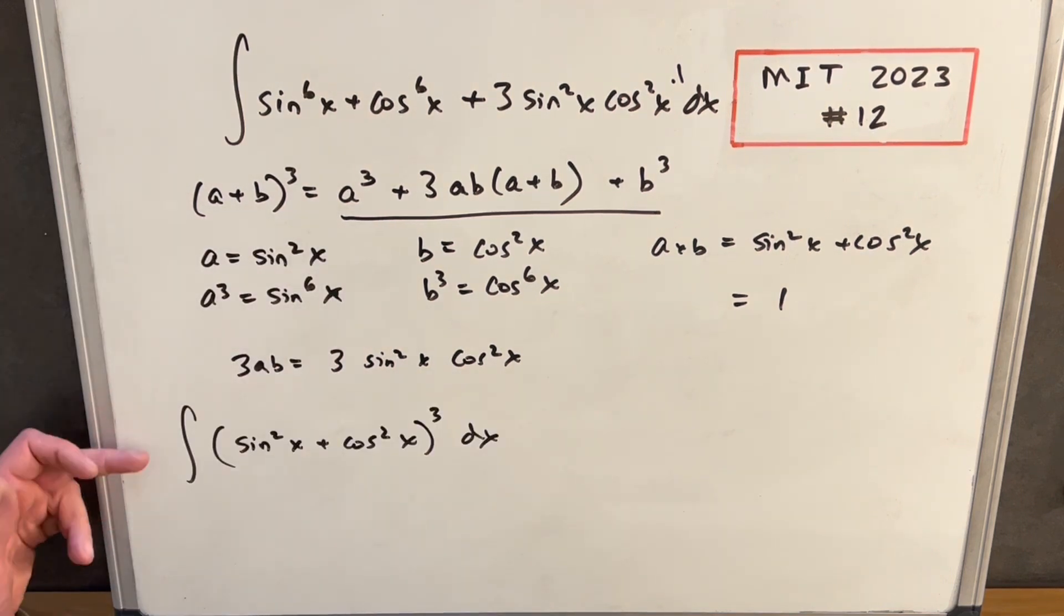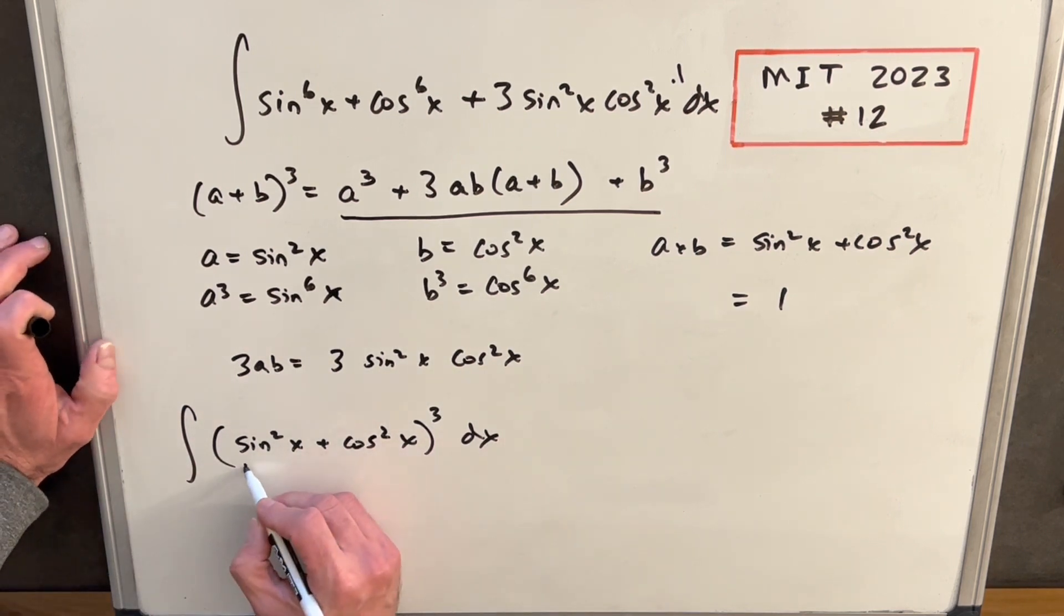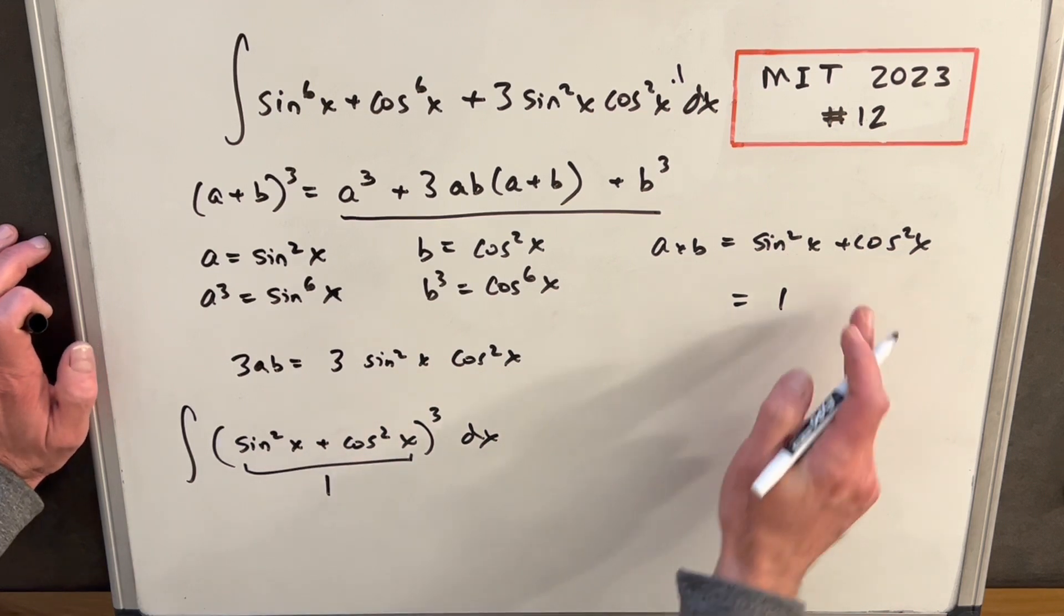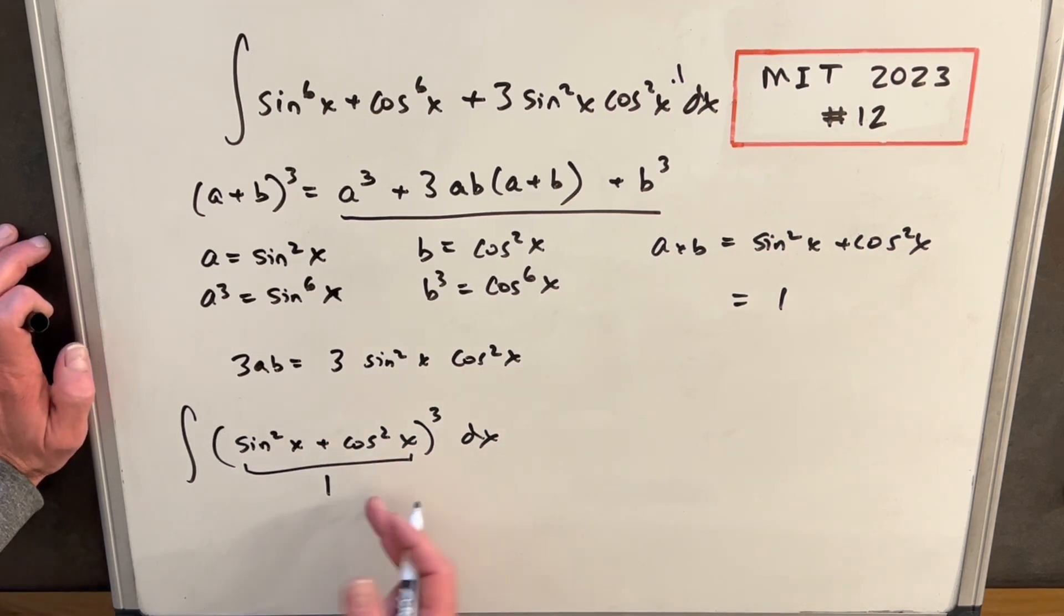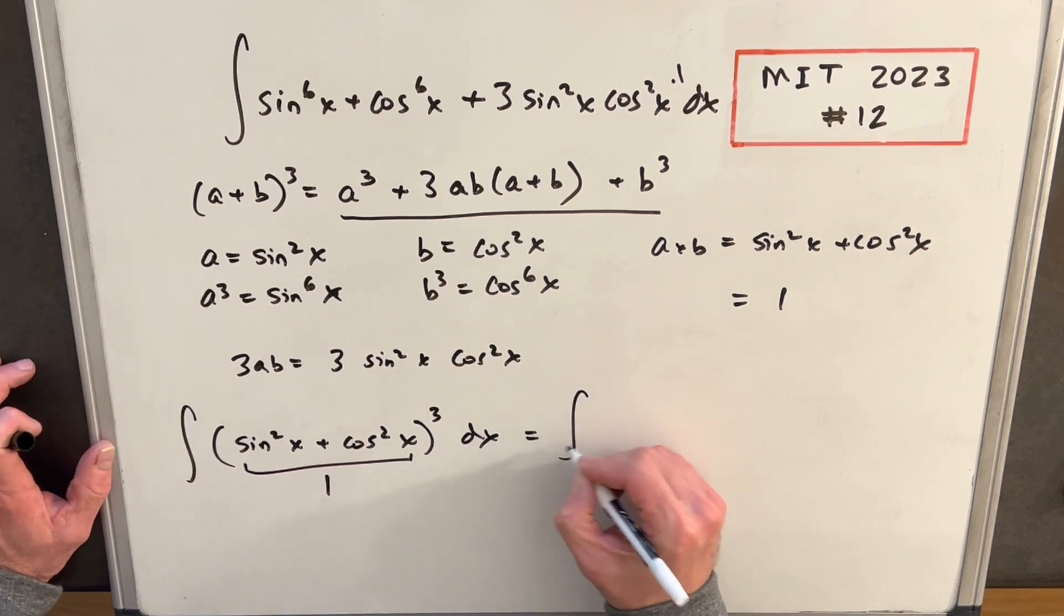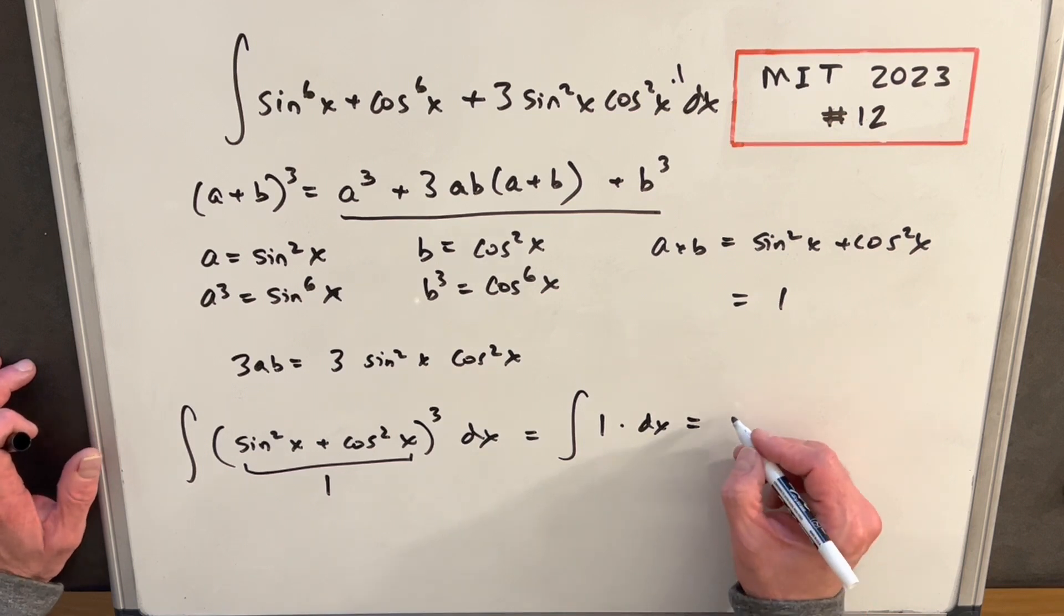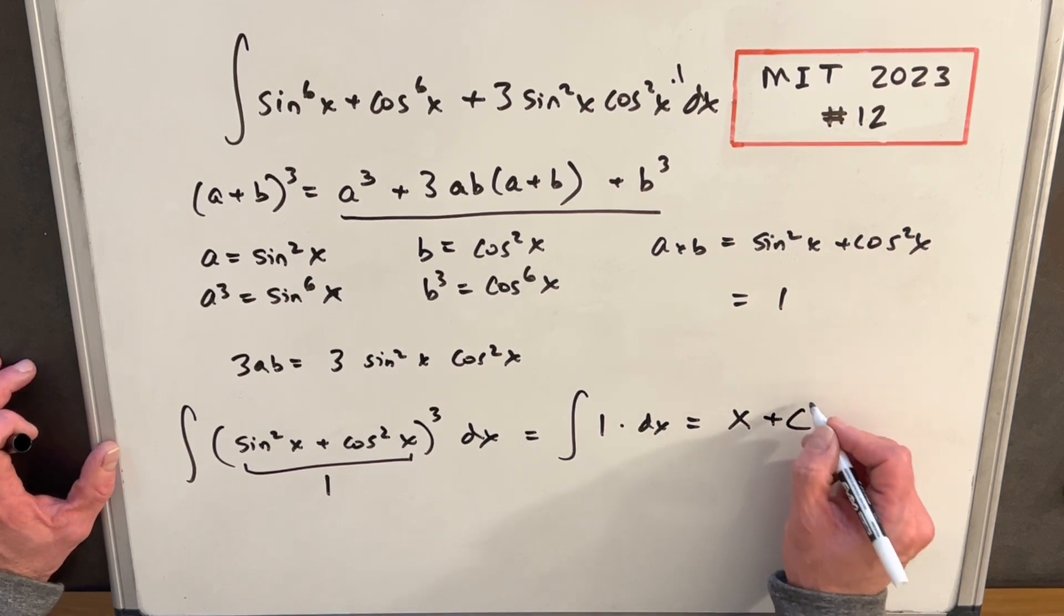Okay, now we've manipulated our integral into this form here, where we have sine squared x plus cosine squared x cubed. But the thing that sticks out here is this is just 1. Just like we have here, this is a plus b equals 1. So we have 1 cubed. And so that means we're just integrating 1 dx, simplest integral in the world. So the answer is just going to be x plus c.